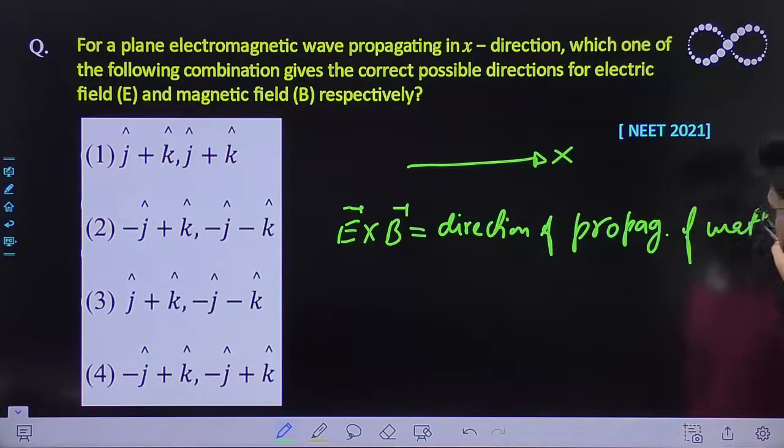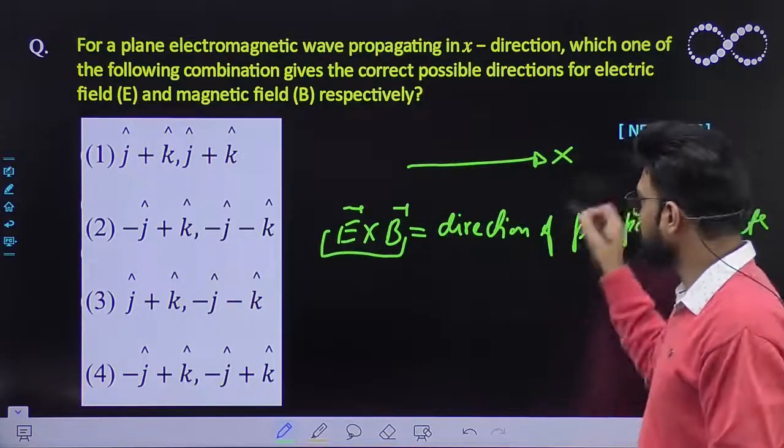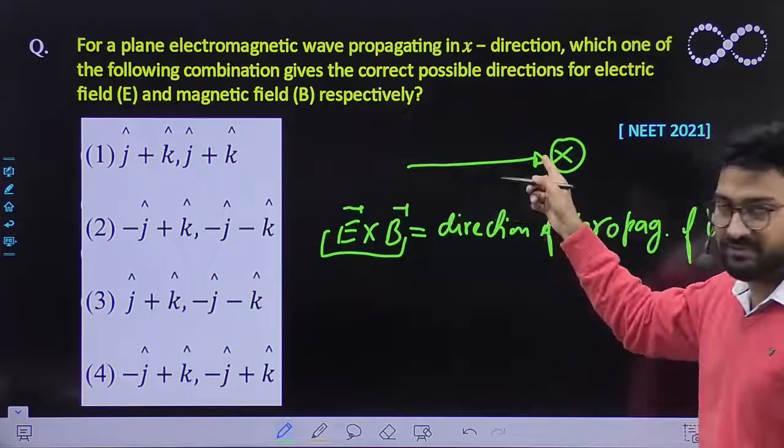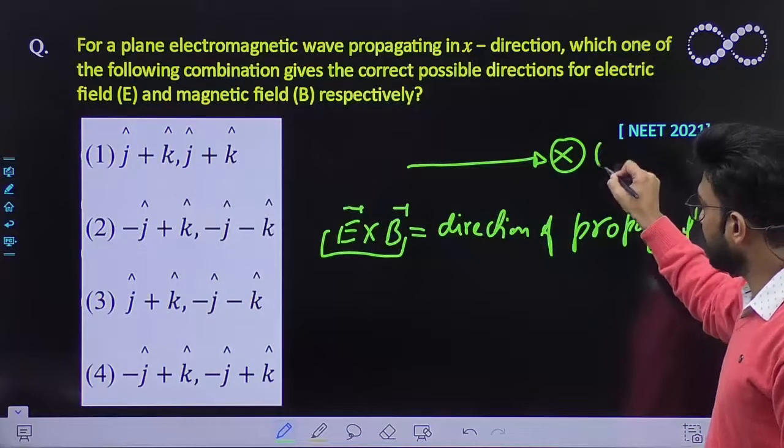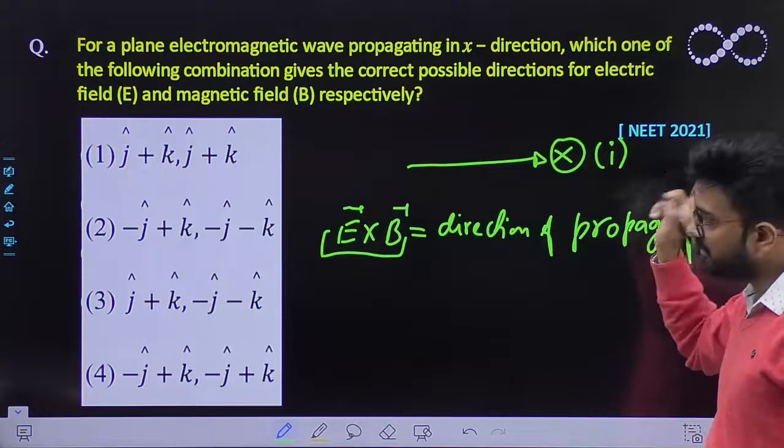The cross product E cross B must be in the direction of x because this wave is propagating in x-direction. That means it must be in terms of i-cap.